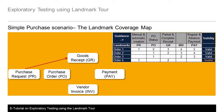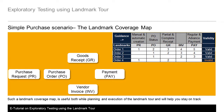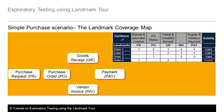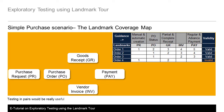The pictorial representation along with the tabular view together form the landmark coverage map. Such a landmark coverage map is useful both while planning and during execution of the landmark tour, and will help you stay on track. As you may be wondering, there can be a large number of combinations possible with barely 5 landmarks — as the application and test expert, you need to decide the important orders that must be tested. Testing in pairs is really helpful.